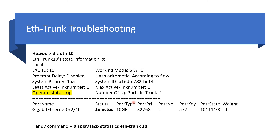The number of up ports in the trunk is shown — since we added one port, we see one port up, which is port 0/2/10 from the previous slide. Its status shows 'selected', meaning it will forward traffic for the LAG. You can also see port type and port priority. The main things to check are the operating status and the status of your member ports — if both are as expected, your LAG should be running fine.